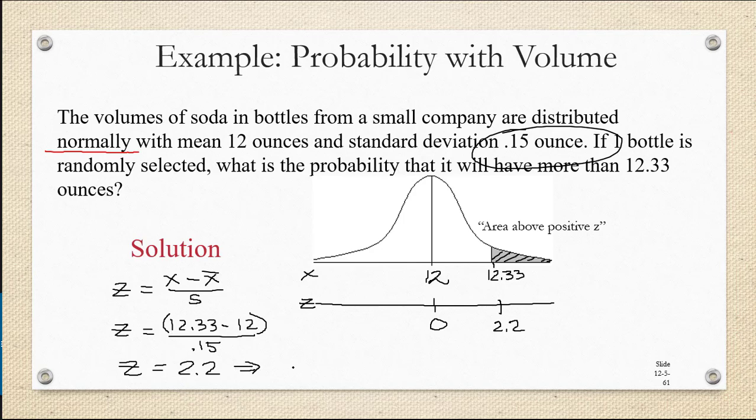I'm also going to look up 2.2 on my standard normal table and see what area that corresponds to. This corresponds to an area of 0.486, but remember that 0.486 is the area between 0 and the z-score that we looked up. So this is the area in this location here. We want to know the area to the right of that.